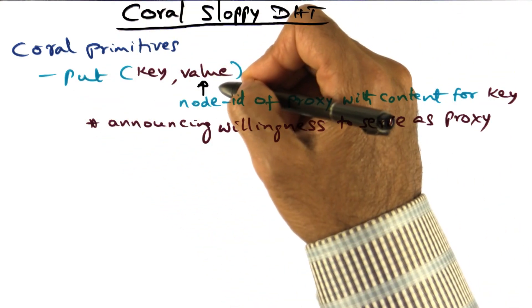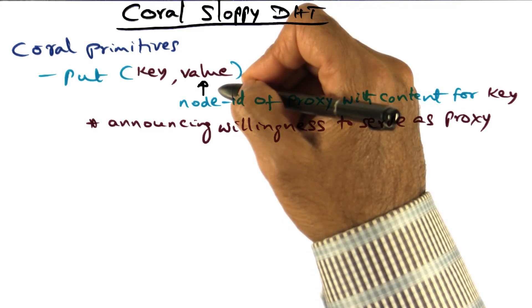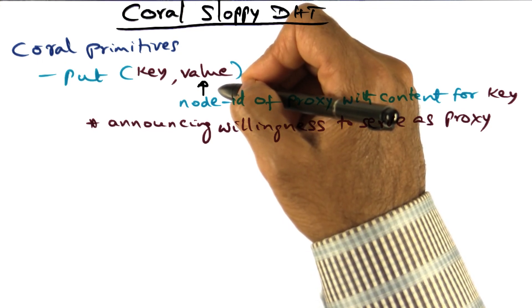The primitives are exactly the same. It's just that the semantics of the put and get are very different in terms of how they are actually implemented.